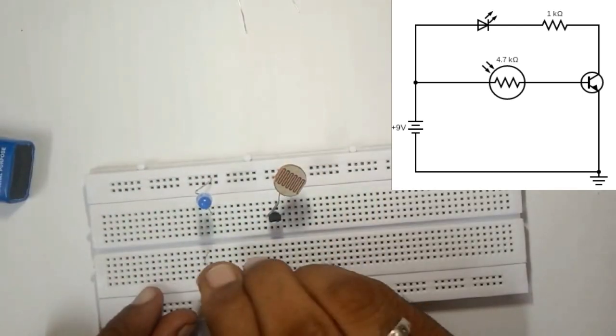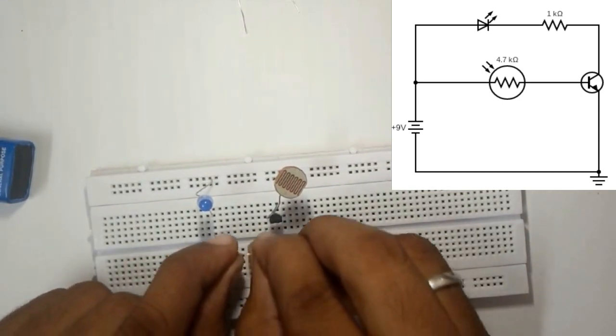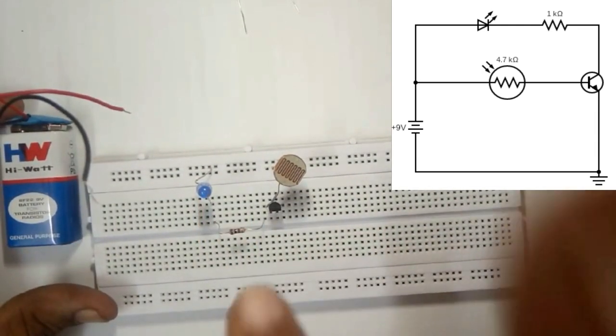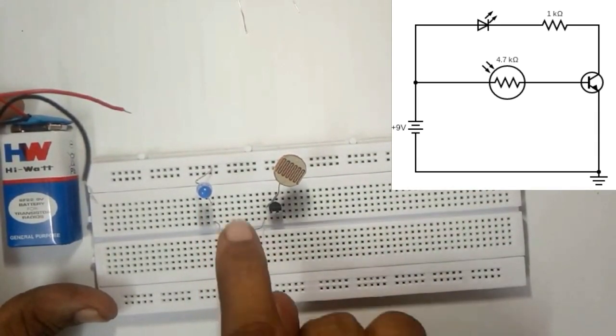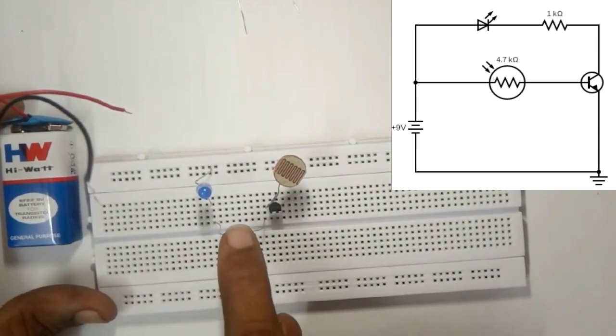We are using one kiloohm resistance here because we are going to supply a nine volt battery, so the LED needs only three volts. That's why we are using a resistance here. If you are using three volts and not nine volts, you don't need to use this resistance.